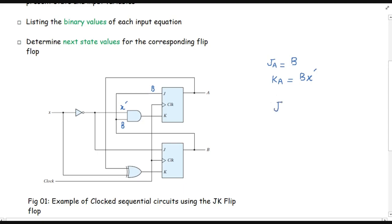For the other flip-flop, J_B = x̄ (x-bar). And K_B — we have input A and input x going to an XOR gate — so K_B = A·x̄ + Ā·x. These are the input equations of this given sequential circuit using JK flip-flops.